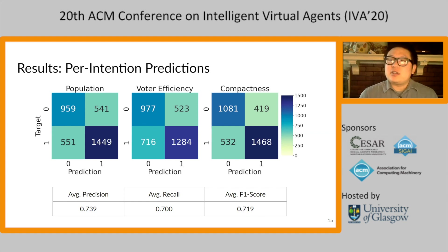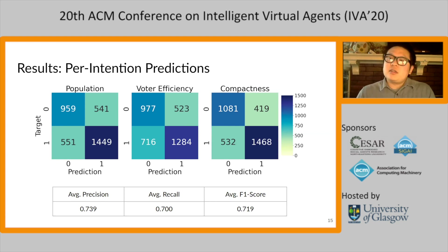Looking at confusion matrices for each intention, interestingly, when marginalizing this way, the network actually predicts whether the human is maximizing compactness most reliably compared to the combination-level results.